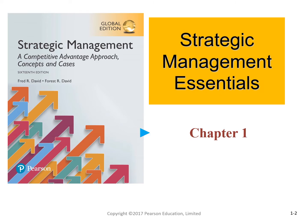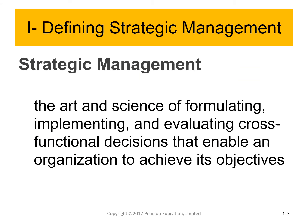The first chapter is titled 'Strategic Management Essentials.' The strategic management concept mainly talks about formulating, implementing, and evaluating the functional decisions that enable an organization to achieve its objectives. Formulation, implementation, and evaluation lay decisions from different departments and different functions.